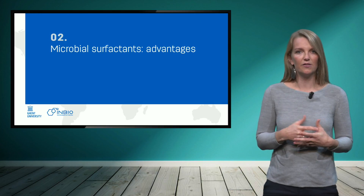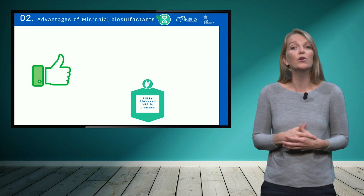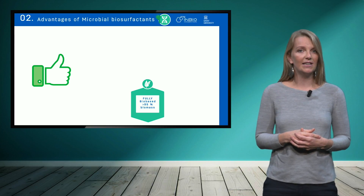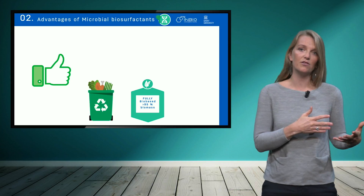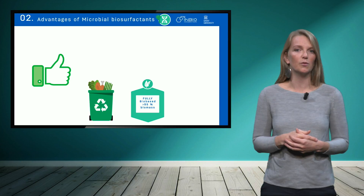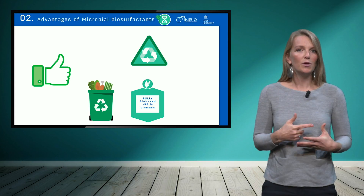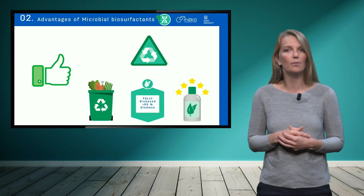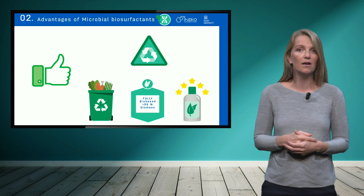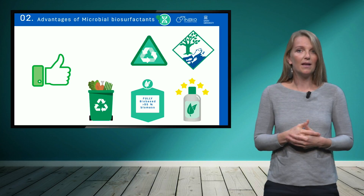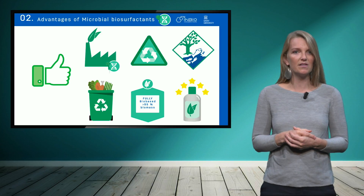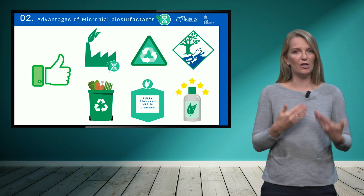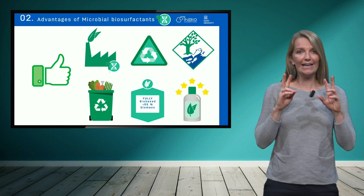Microbial biosurfactants have some clear advantages. They can be produced from entirely renewable resources — so 100% biomass — likewise as other biosurfactants. But additionally, the production can occur from waste and even sidestreams, which is more difficult for chemical production routes. Microbial biosurfactants are also biodegradable, have added value such as additional biological properties, are not ecotoxic, and the production process happens at low temperatures in water without toxic catalysts — a clean biotransformation process.